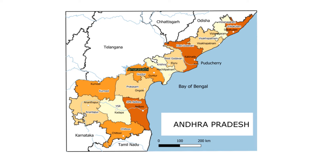In Andhra Pradesh, we have two regions: one is Coastal Andhra and the other is Rayalaseema. Coastal Andhra contains nine districts: Srikakulam, Vijayanagaram, Vishakhapatnam, East Godavari, West Godavari, Krishna, Guntur, Prakasham, and Nellore. Rayalaseema includes the districts Kurnool, Anantapur, Kadapa, and Chittoor.